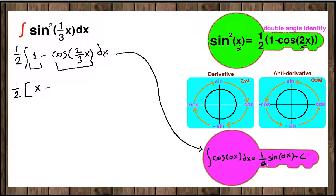We can apply this shortcut formula, so it's 1/a times sin(ax), where a is the coefficient in front of the x. So 1 over 2/3 will be 3/2 (the fraction flips), and sine of 2/3 x plus C.